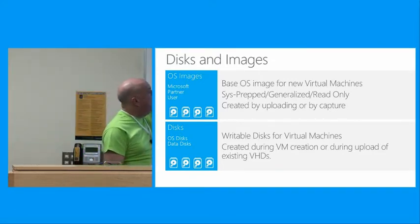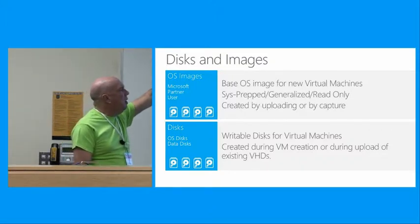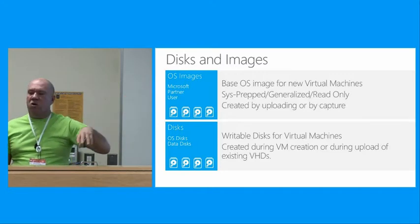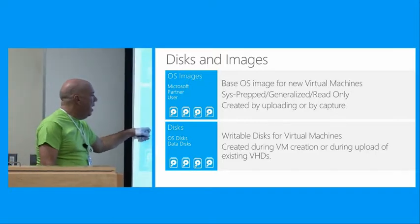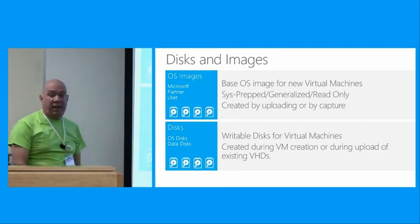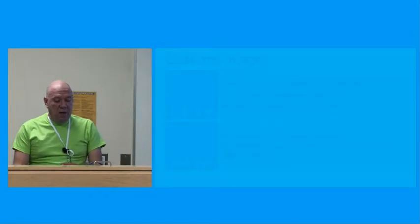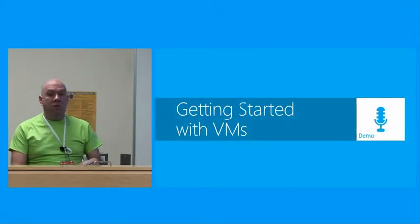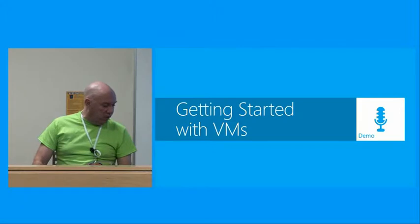You have an OS image prepared for the virtual machines — this is your C drive. You can create it by uploading it or by capturing something from the gallery. These things are persistent over the course of the running application. Let's take a couple of seconds and actually show you what this looks like for real.